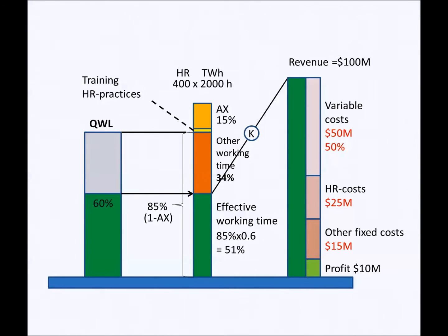Now the company wants to improve human capital productivity and therefore invests some time in staff training and HR practices. For simplicity, let's assume that this training and HR practices time is already included in the earlier year auxiliary working time. So the time for work remains the same. When training and HR practices are done properly, there will be a positive effect on the quality of working life. In practice, we have recorded that a 5% improvement is possible and realistic.